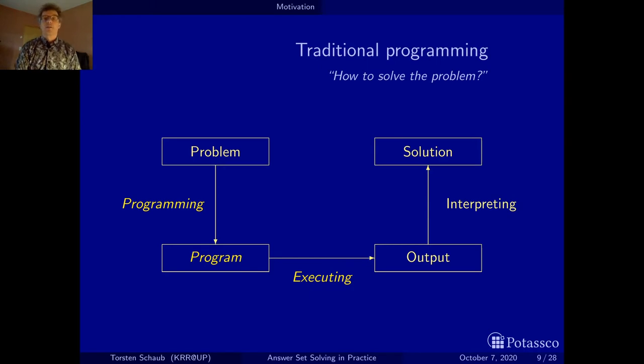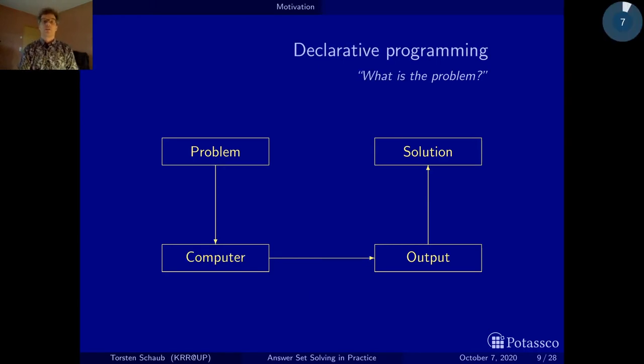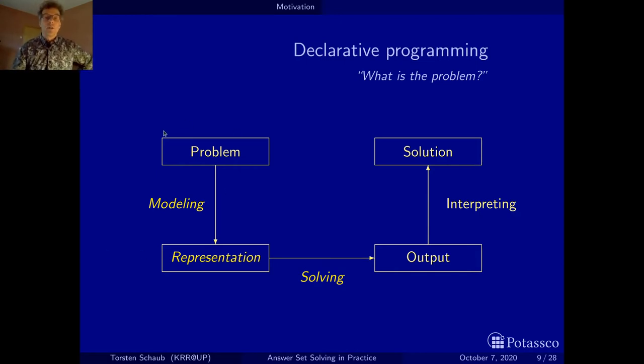The other approach that treats things a bit differently is called declarative programming, where the focus lies on describing what the actual problem is. We just shift from a how question to a what question. So here then the idea is to say, okay, in this first step we are only modeling the problem and we give the problem a formal representation that the computer can understand.